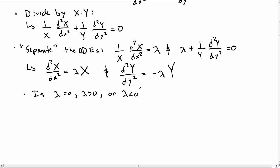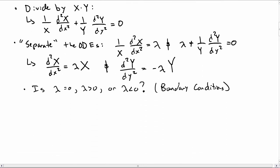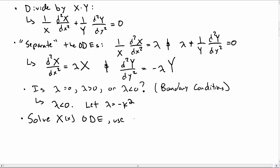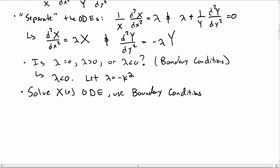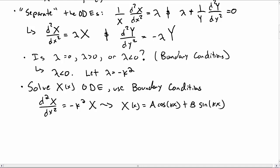To solve these we need to know whether lambda equals zero, greater than zero, or less than zero. Using our boundary conditions, we determine that lambda is going to be less than zero, so let's try that. We let lambda equal minus k squared so that we know it's less than zero. The x ordinary differential equation now becomes the second derivative of X with respect to x squared equals minus k squared times X, with solution A cosine(kx) plus B sine(kx).